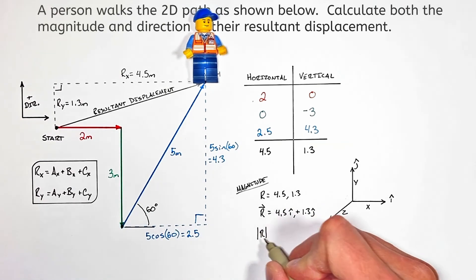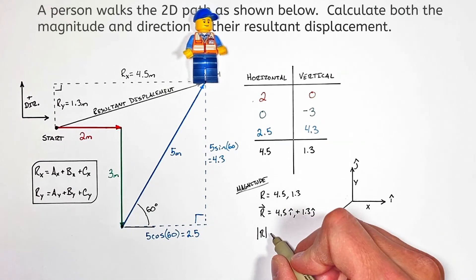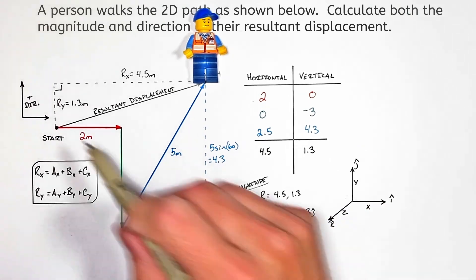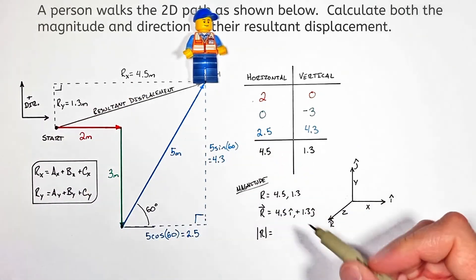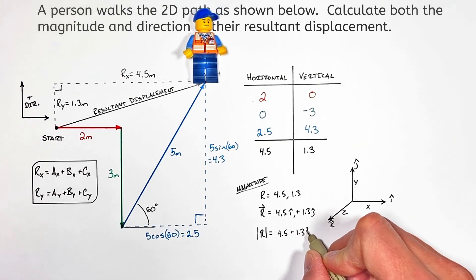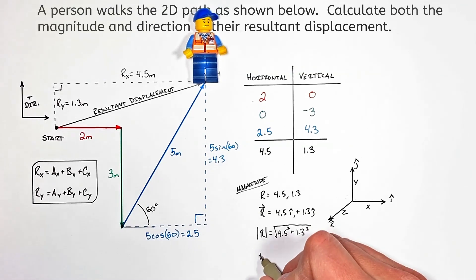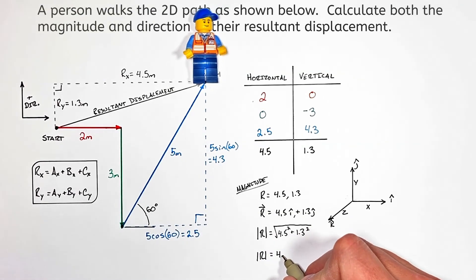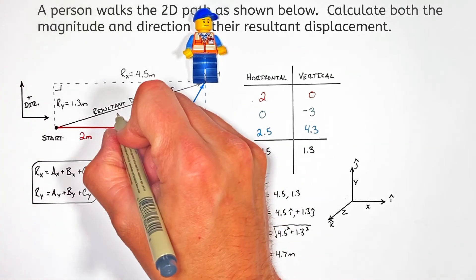In physics the way we show magnitude is with absolute value symbols. Realize because we know the two sides of a right triangle, in order to find the magnitude of this vector we simply need to use the Pythagorean theorem. We find the resultant displacement of our little guy is 4.7 meters.